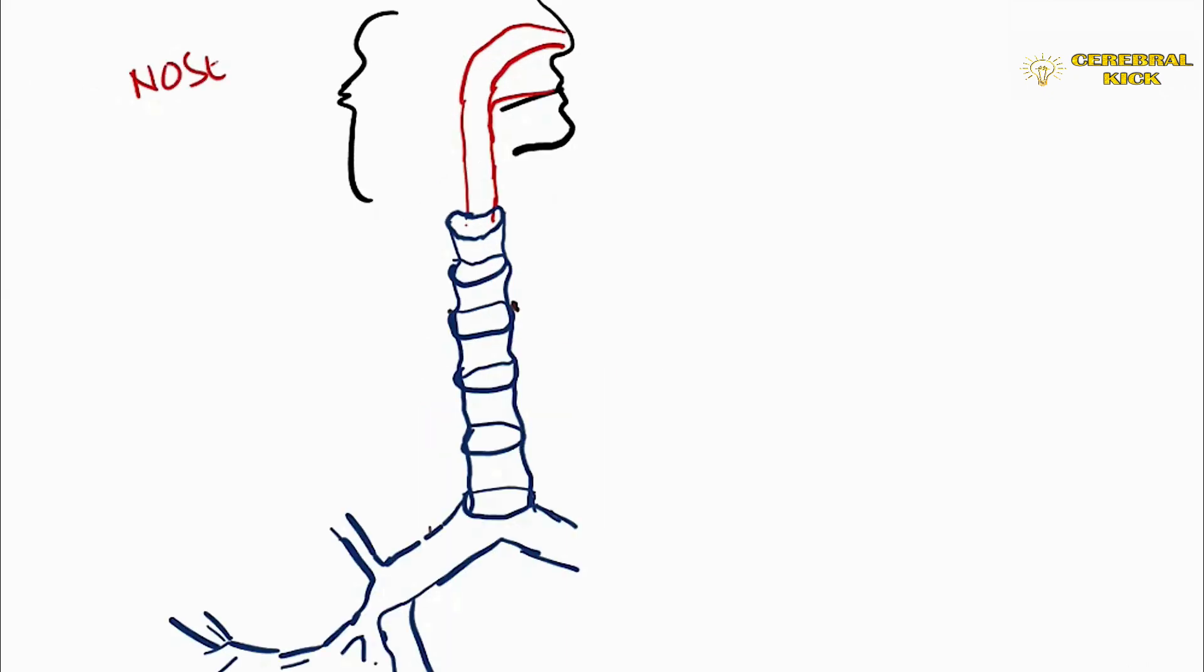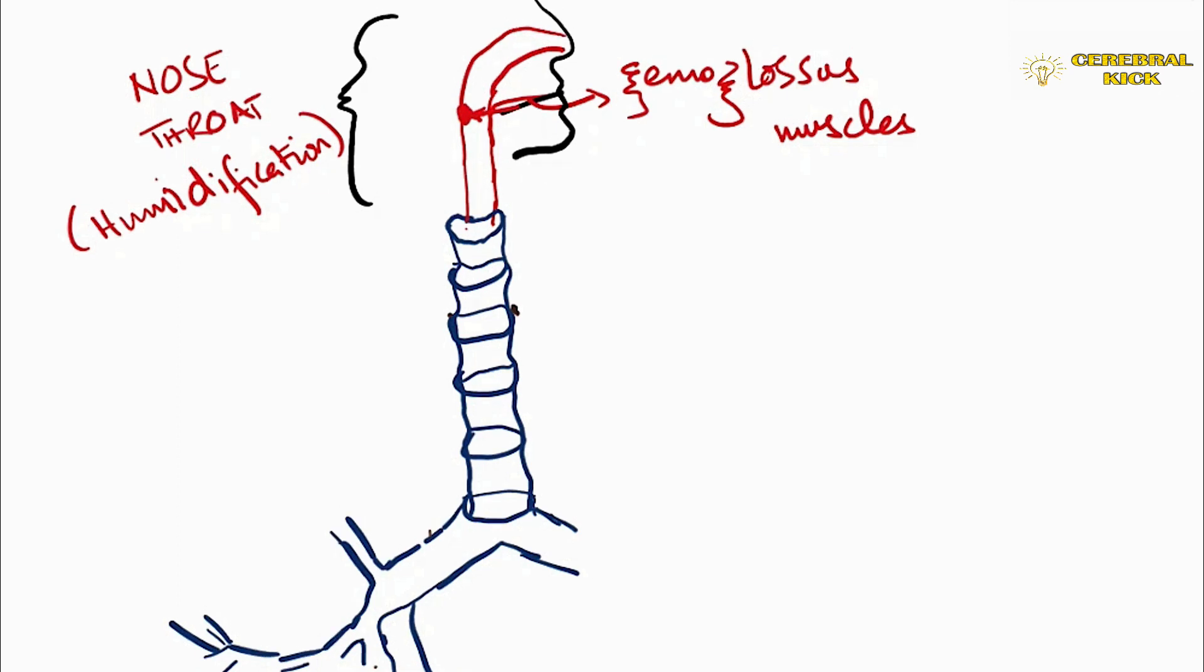The upper respiratory zone of nose and throat is primarily responsible for humidification of gases. If the gases are dry, they would affect the cilia and cause coughing. I would mention here the genioglossus muscle because this is responsible for keeping the tongue away from falling on the posterior pharynx during breathing.